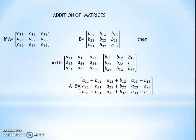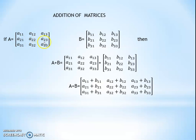Now, having studied 2 by 2 order matrix addition, we also focus on matrix addition for matrices of order 3 by 3. Matrix A has elements A11, A12, A13; A21, A22, A23; A31, A32, A33 — that is 3 rows and 3 columns. B equals B11, B12, B13; B21, B22, B23; B31, B32, B33.